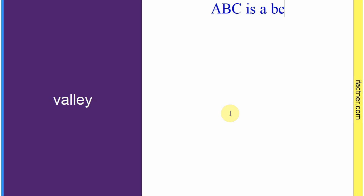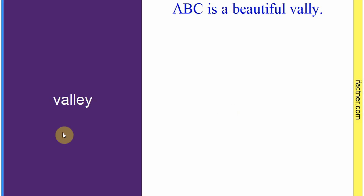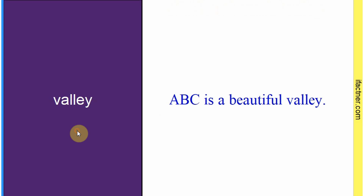Word hai: 'valley'. Sentence: 'ABC is a beautiful valley.' ABC jo hai woh khoobsoorat valley hai. Toh 'valley' us jagah ko kehte hain jis ke char taraf ya dono taraf pahar ho aur darmiyan mein ek flat surface ho. Sentence banaaya: 'ABC is a beautiful valley.'